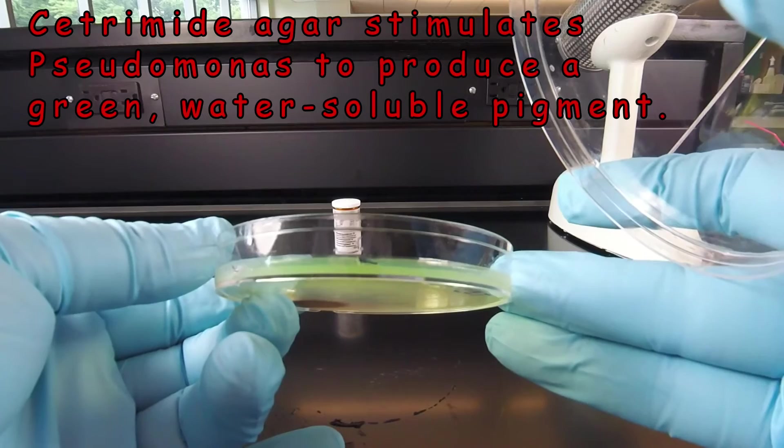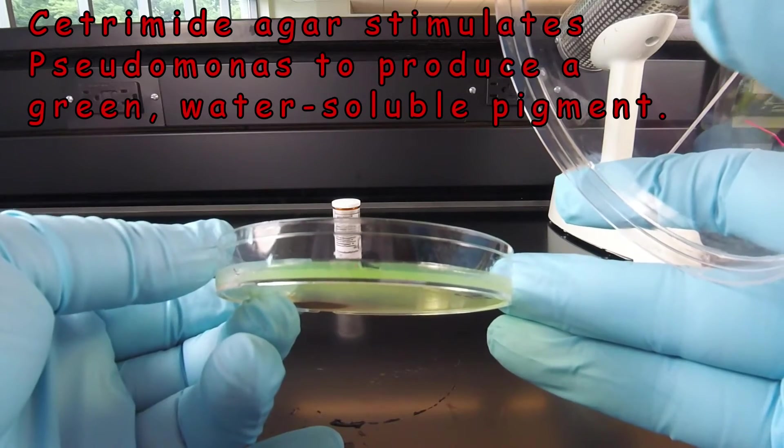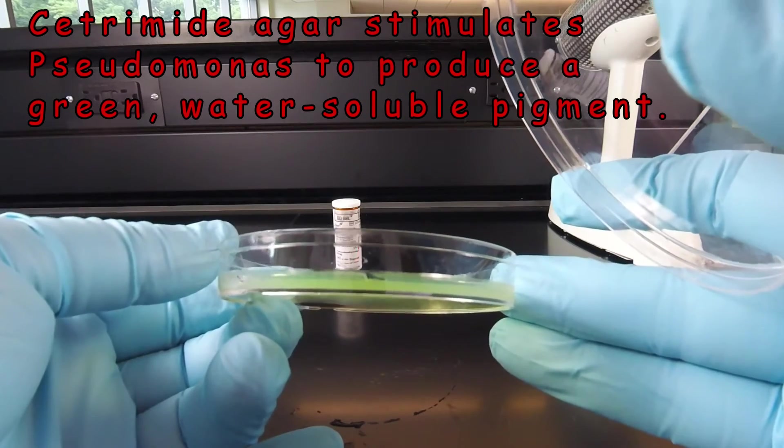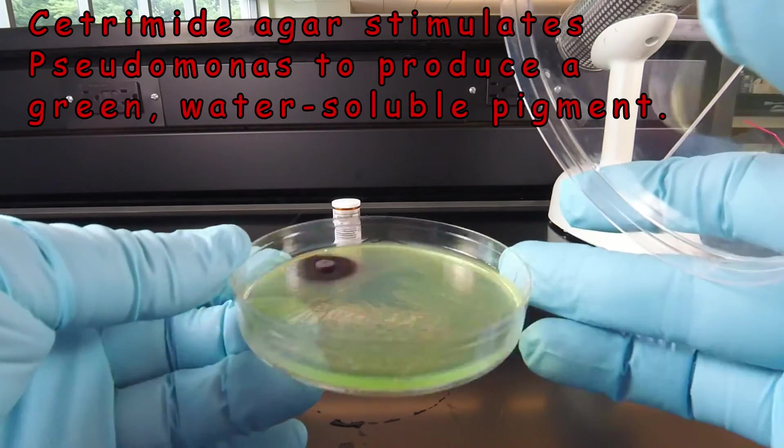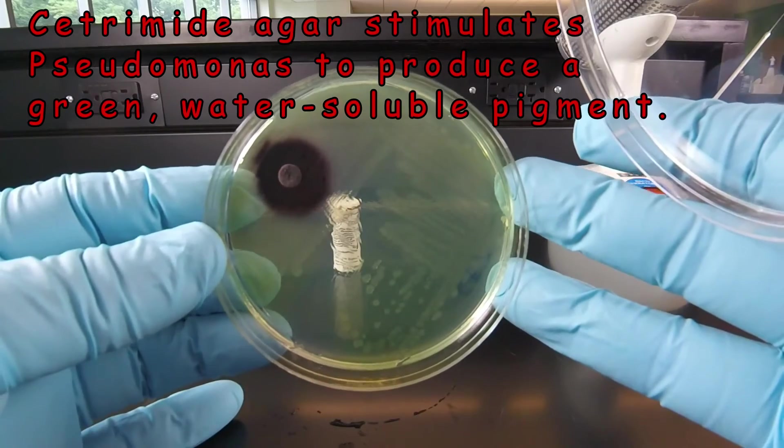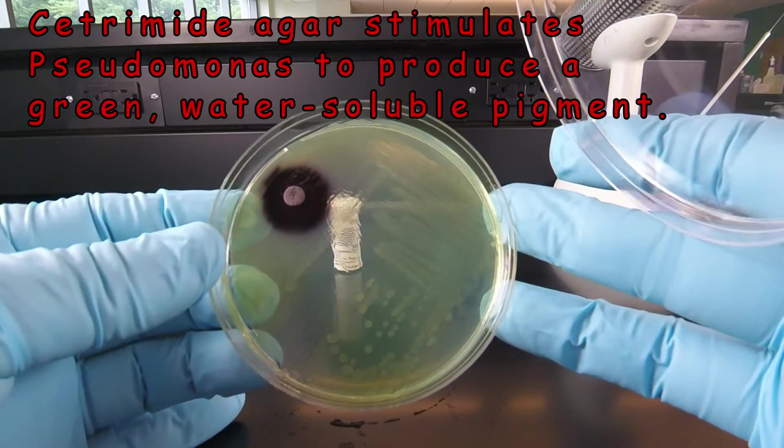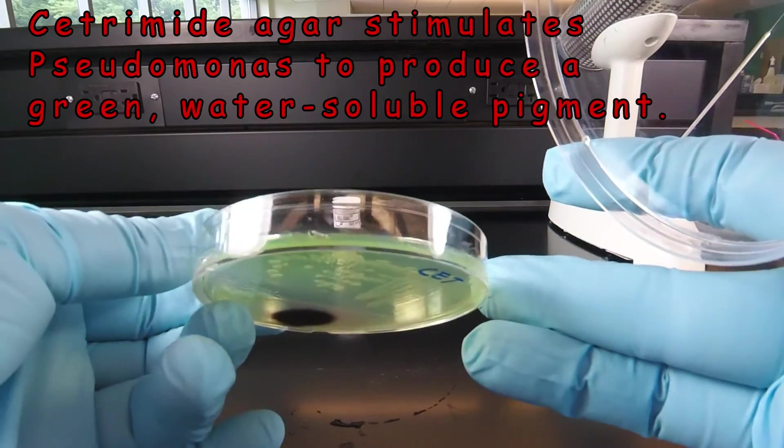As we showed you in a previous video, the cetramide agar looks clear. It has no color to it initially. So that shows us that the bacterium is producing a green water soluble pigment where both the colonies and the agar appear pigmented.